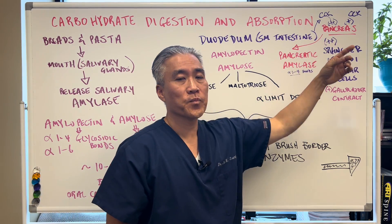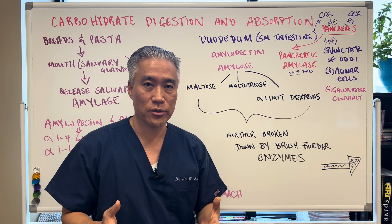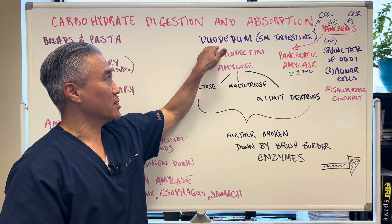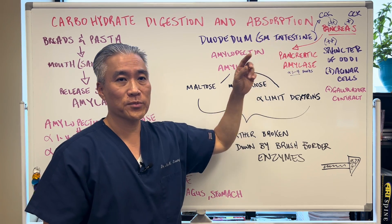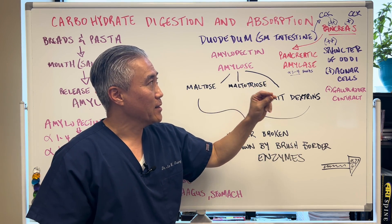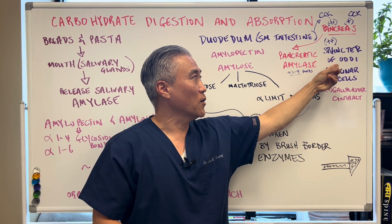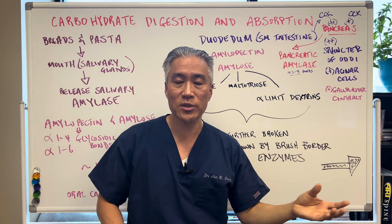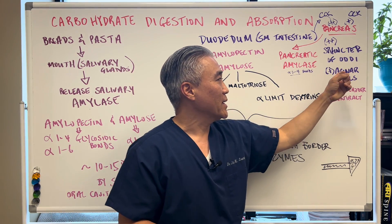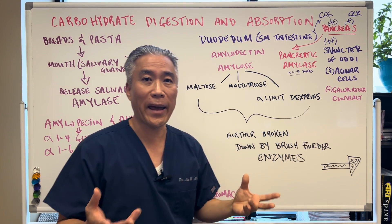Once it hits the stomach and then goes into the duodenum, the amylase has been deactivated, so it needs to get amylase from somewhere else. This is where the pancreas comes in. A lot of people just think about the pancreas as producing insulin and glucagon for blood sugar management, but the pancreas is very important for digestion. Once food hits the duodenum, it releases a hormone called cholecystokinin. CCK stimulates the pancreas two ways: it opens up the sphincter of Oddi so enzymes can be released into the duodenum, and it stimulates the acinar cells, which produce pancreatic amylase.